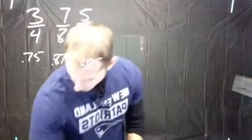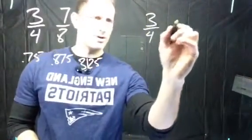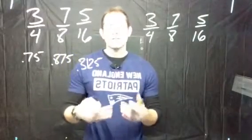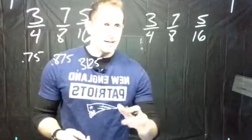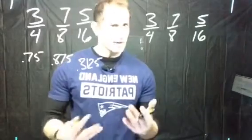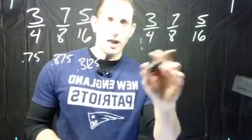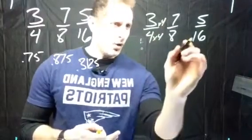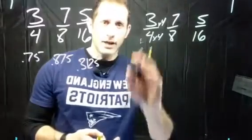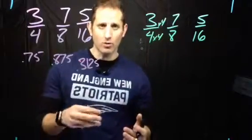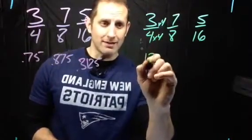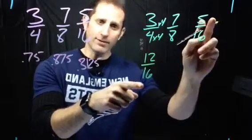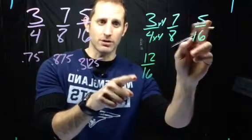So I'm going to rewrite this — three-quarters, seven-eighths, and five-sixteenths. Strategy number two is quite different: we are going to try to get common denominators, or the same-size pieces. Sometimes it's easier than others. In this case, if we take a look at these denominators, they all have something in common. If I take four and multiply it by four, I get sixteenths. So I can change the quarters into sixteenths. Whatever I do to the bottom I do to the top, creating an equivalent fraction: three times four is twelve, four times four is sixteen — so three-quarters equals twelve-sixteenths. Now I can compare twelve-sixteenths very easily to five-sixteenths — I have more pieces out of sixteen, so twelve-sixteenths is larger.